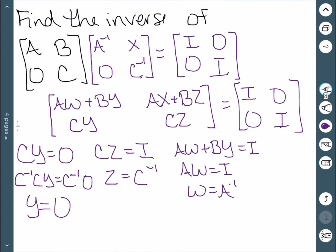The only thing I'm left with is X, and that comes from our final equation. AX plus BZ is equal to zero. Well, I'm going to subtract this BZ to the other side and go ahead and say that Z is actually C inverse. Now I can multiply both sides by A inverse to get that X is negative A inverse B C inverse. Running out of room a little bit, but we can fit it in. Minus A inverse B C inverse. So now I have a formula for the inverse.